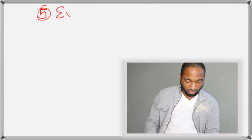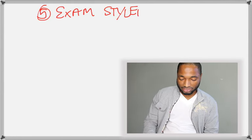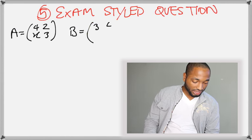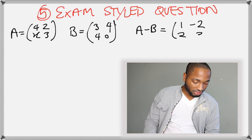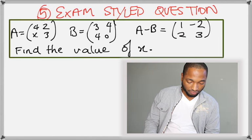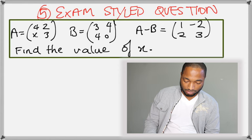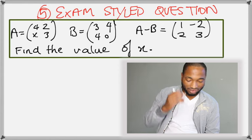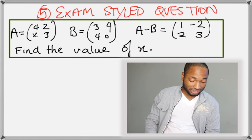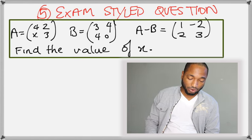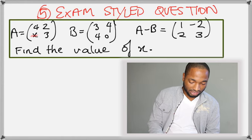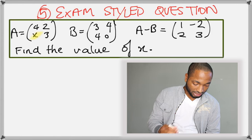Alright, so next, look where we reach. Exam style questions already. So, this is a question like what you can get in your exam. A is equal to (4, 2, x, 3). B is equal to (3, 4, 4, 0). A minus B is equal to (1, 2, negative 2, 3). Find the value of x. Right? Classic maths. Classic maths question here. Find the value of x. Always finding x. And that's the x there. You see it? X.